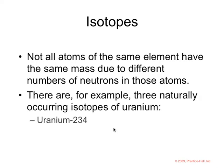If we look at uranium, there are three naturally occurring isotopes: uranium-234, 235, and 238.